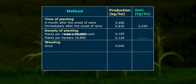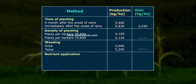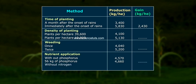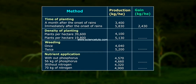For weeding: no weeding gave 4,040 kg per hectare, while weeding twice gave 5,200 kg per hectare. For nutrient application: without phosphorus, production was 4,570 kg per hectare; with 56 kg of phosphorus, it was 4,660 kg per hectare. Without nitrogen, production was 4,320 kg per hectare; with 78 kg of nitrogen, it was 4,900 kg per hectare.